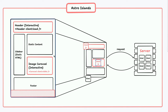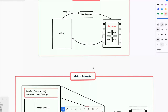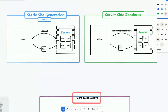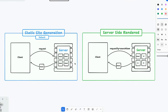That's the concept of Astro Islands — you can have a mostly static page, whether server-side rendered or pre-built, and then use things like React, Vue, or Svelte as you need more interactivity. You use a client directive to tell it when you want that individual component to be interactive. I hope that was helpful to talk through both Astro Islands and middleware. So let's now look at these two different options in actual code.